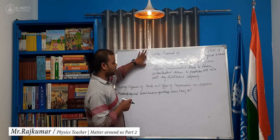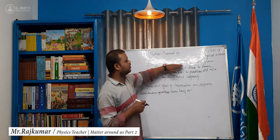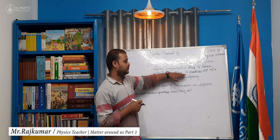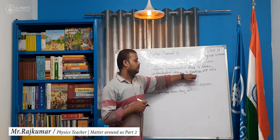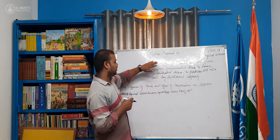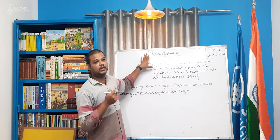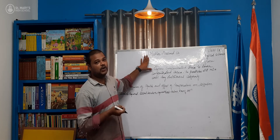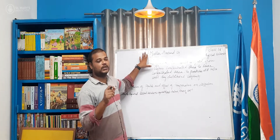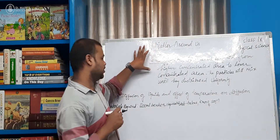Now let us come to the topic called diffusion. Diffusion is the movement of fluid from a higher concentrated area to a lower concentrated area. The particles will mix until they are distributed uniformly. For example, we took the example of incense sticks. Whenever we light an incense stick at a particular corner, it will reach the center, or the fragrance will reach the other corner in a fraction of seconds. This is the best example of diffusion.